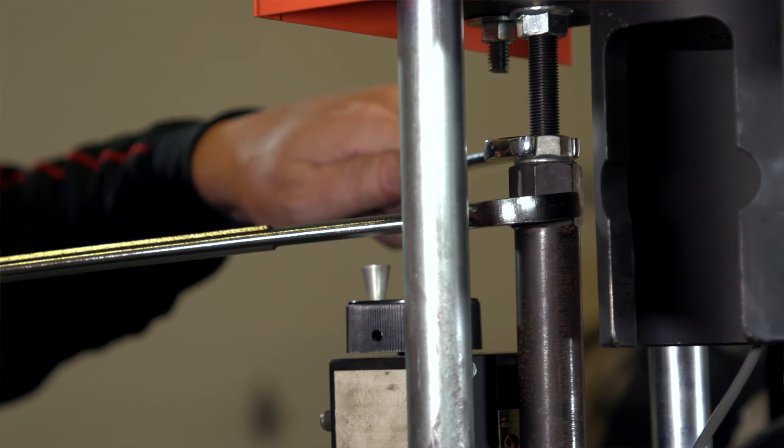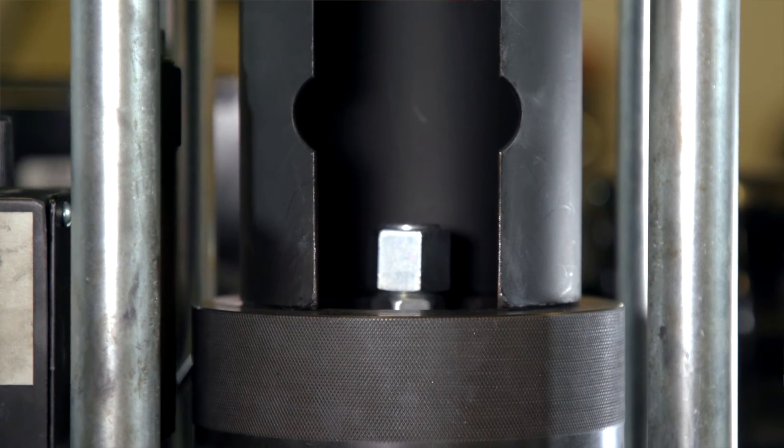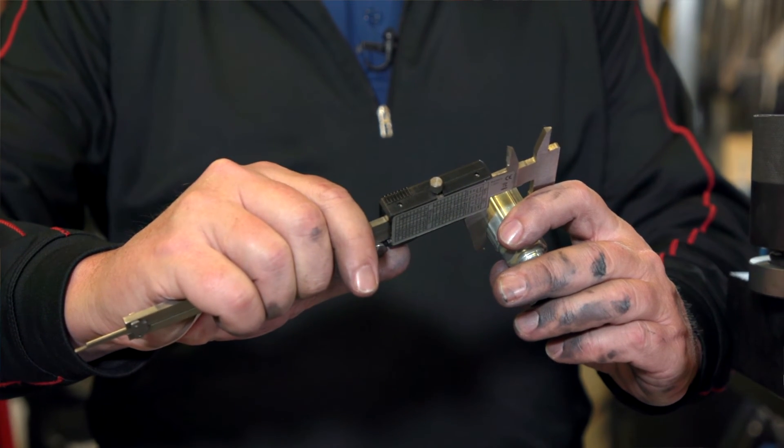Then tighten the lock nut down, crimp a new 8G coupling, and measure the crimp diameter of the fitting to verify that you are within the acceptable limits.